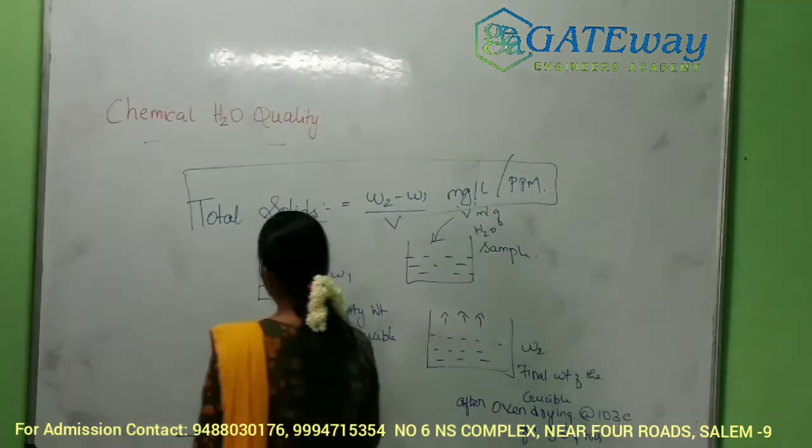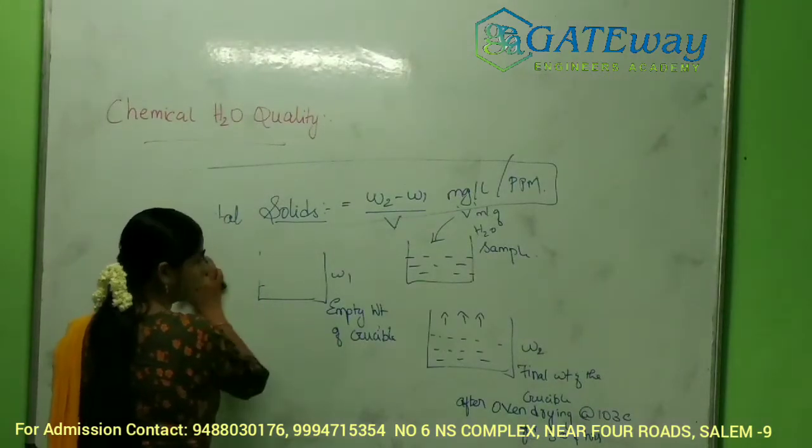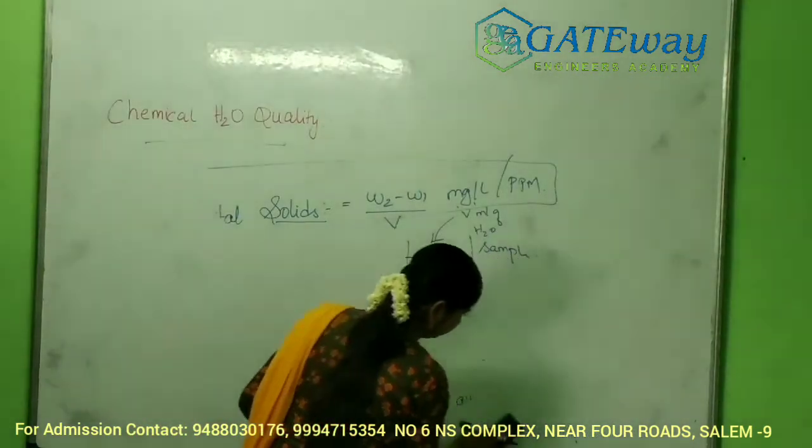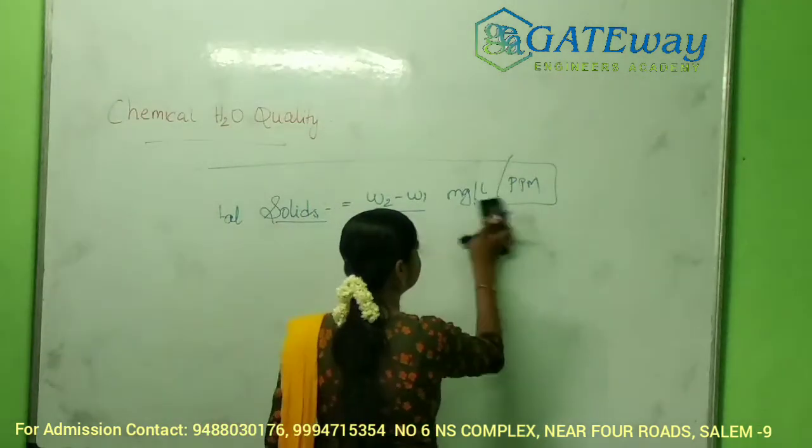In total solids, we have a list of types including suspended solids, total suspended solids, total dissolved solids, and non-volatile solids.